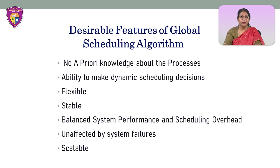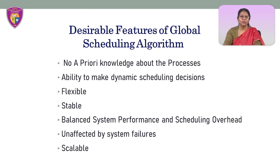There are a few desirable features of a global scheduling algorithm. The first one is no a priori knowledge about the processes. In computing, scheduling is the method by which threads, processes, or data flows are given access to system resources such as processor time and communications bandwidth. This is usually done to load balance and share system resources effectively, or achieve a target quality of service.